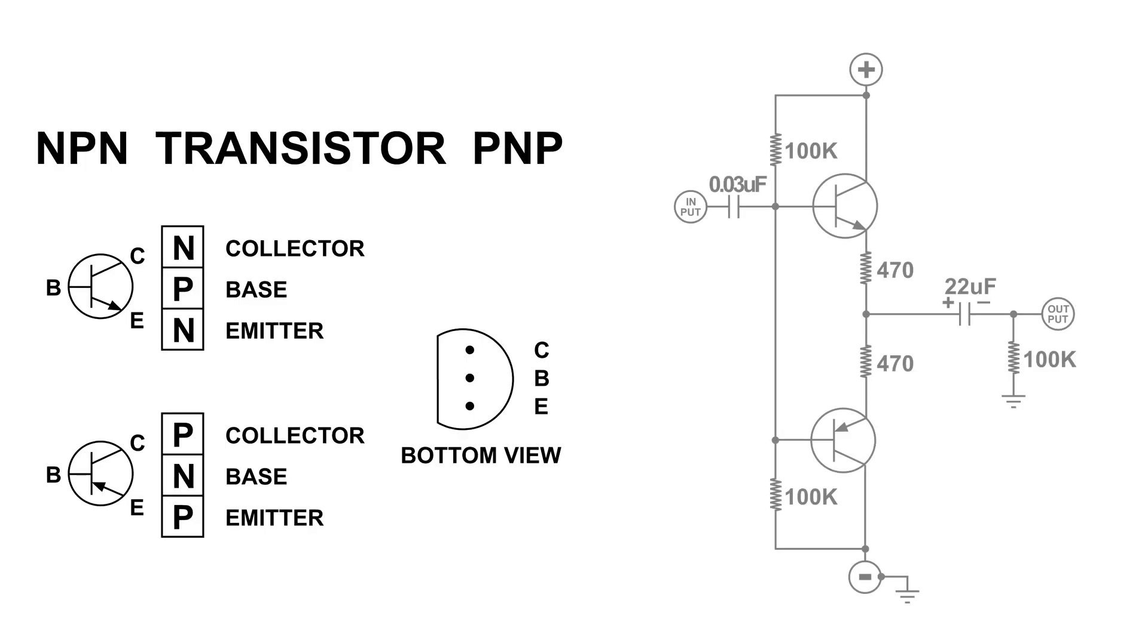Here is a push-pull transistor amplifier using an NPN and a PNP transistor. We're going to be using 12 volts and we're going to be looking at the output with an oscilloscope.